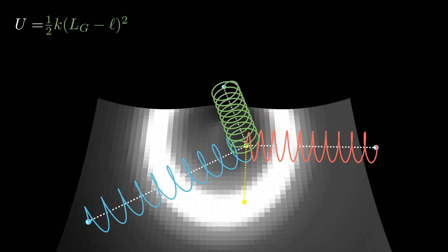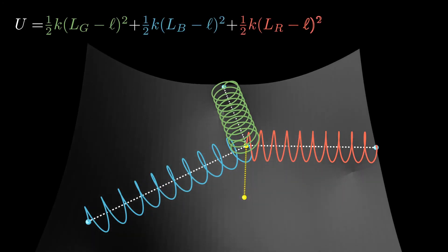Considering the potential for all three springs, it becomes a lot less clear where the minimum energy is. However, we can still use the fact that the springs push in the direction that decreases the energy.